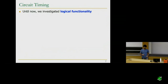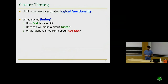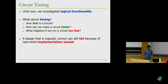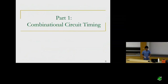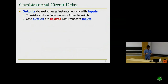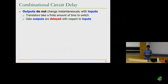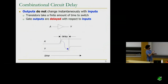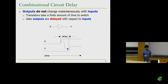So far we've talked about logical functionality — whether our circuit actually implements the logic function we want. But what about timing? How fast is the circuit we're designing, and how can we make it faster? What happens if we try to run our circuit too fast? A design that's logically correct can actually still fail because of real-world implementation issues centered around timing — and that's what we'll cover today.